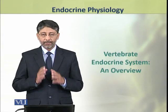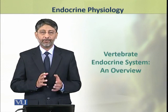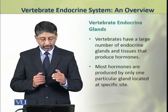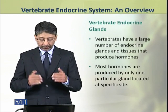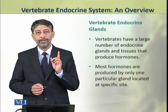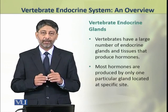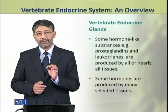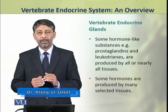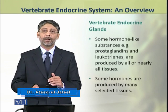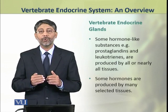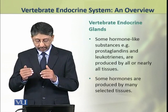Dear students, in this topic we shall take an overview of the endocrine glands of vertebrates. The vertebrates have a large number of endocrine glands and tissues that produce hormones. Most of the hormones are produced by only one endocrine gland, which is located at a specific site. However, some hormone-like substances, such as prostaglandins and leukotrienes, are produced by most or all tissues of the body. And some hormones are produced by more than one specific tissue of the body.